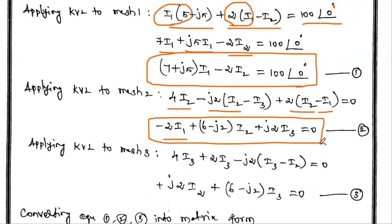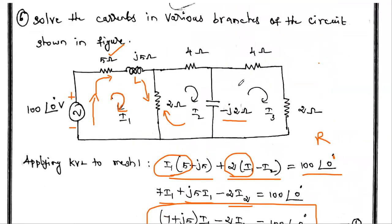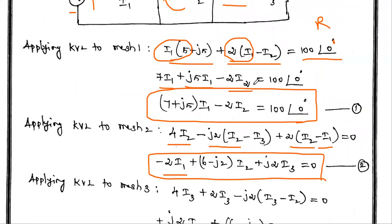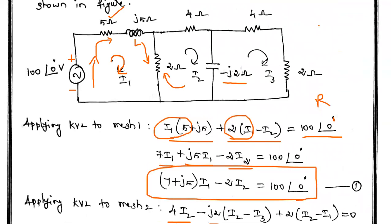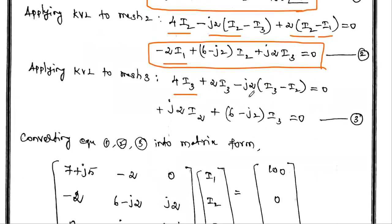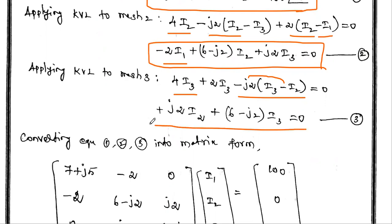For the third loop, writing the KVL equation: the voltage drop across the 4 ohm resistor is 4·i3, drop across the 2 ohm resistor is 2·i3, and the voltage across the capacitor is -j2·(i3 - i2). There is no i1 term. Collecting terms: i2 term is +j2·i2; combining 4·i3 + 2·i3 = 6·i3 minus j2·i3 gives (6 - j2)·i3. The third equation is: j2·i2 + (6 - j2)·i3 = 0.